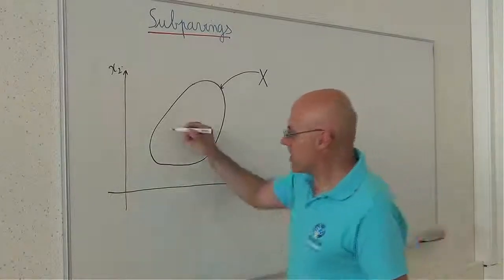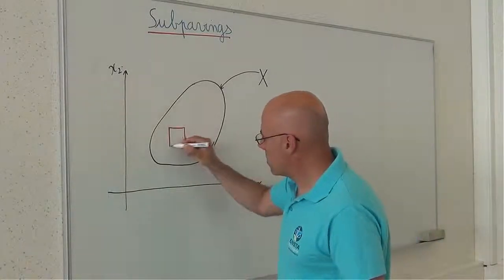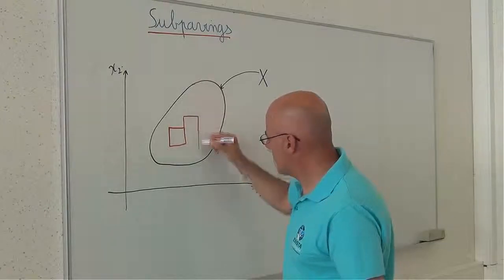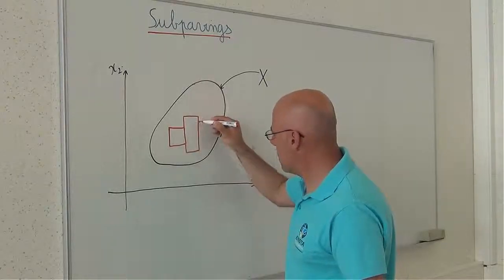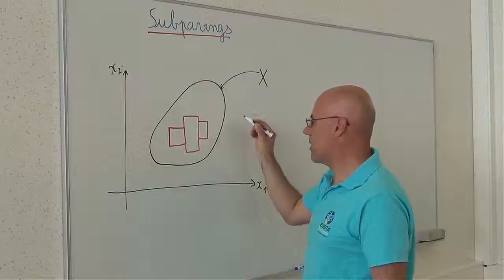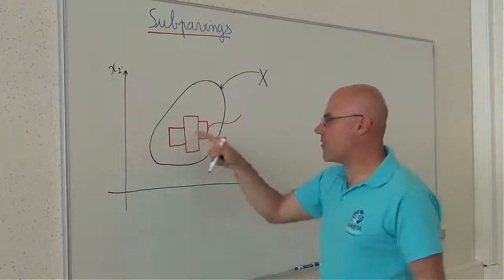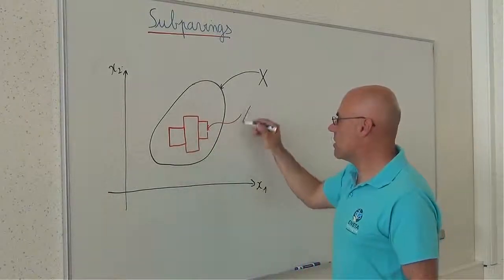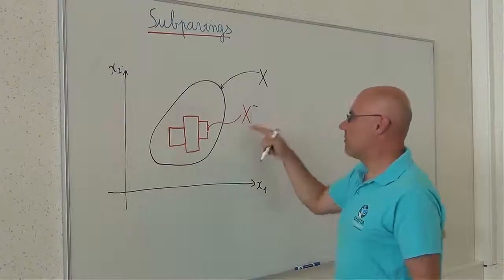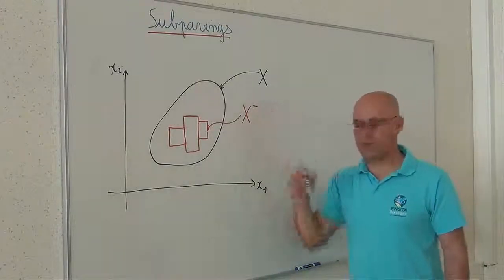For instance, if I take one box, another box, another box here, the union of these three boxes is a subpaving, let's call it x minus.